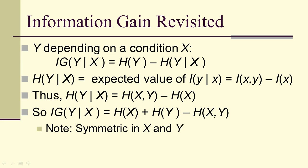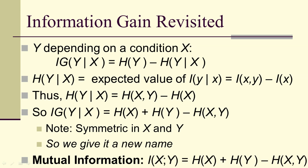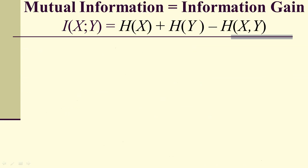And the information gain is therefore the entropy of X plus the entropy of Y minus the joint entropy of X and Y. Notice this is symmetric in X and Y. So we're going to give it a new name. We're going to call it mutual information.